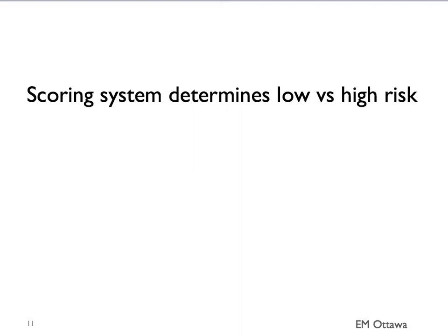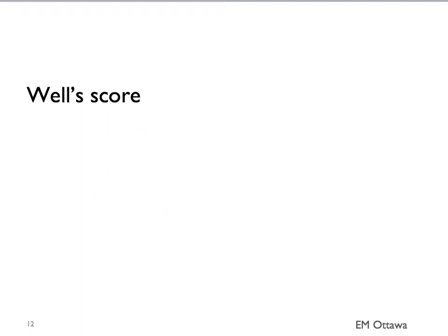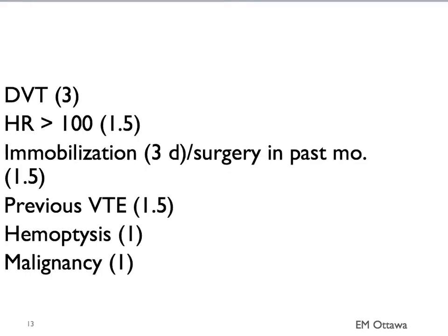We use different scoring systems to decide whether the patient is low or high risk based on their clinical presentation. There are two main scoring systems: the Wells score and the Geneva score. We will discuss the Wells score here. The Wells score is a series of questions scored about the patient's clinical presentation. They include: clinical signs and symptoms compatible with DVT (3 points), tachycardia (1.5 points), immobilization more than 3 days or surgery in the past month (1.5 points), previous venous thromboembolism (1.5 points), hemoptysis and active malignancy (1 point each).